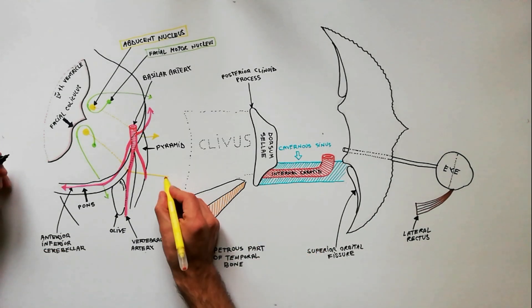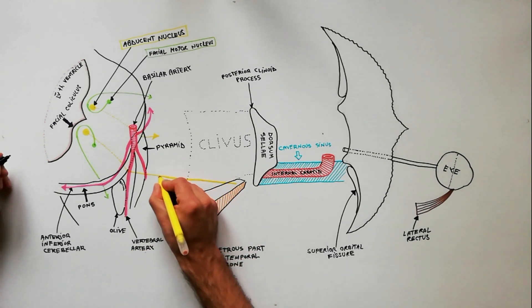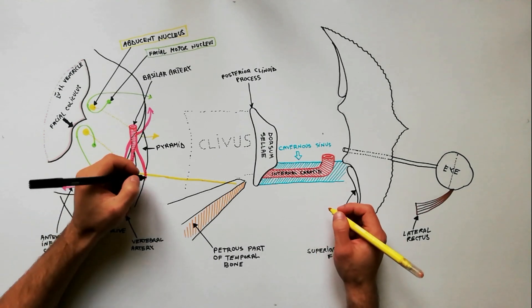Over the clivus, the nerve runs upward, forward and laterally, approaching the tip of the petrous part of temporal bone.